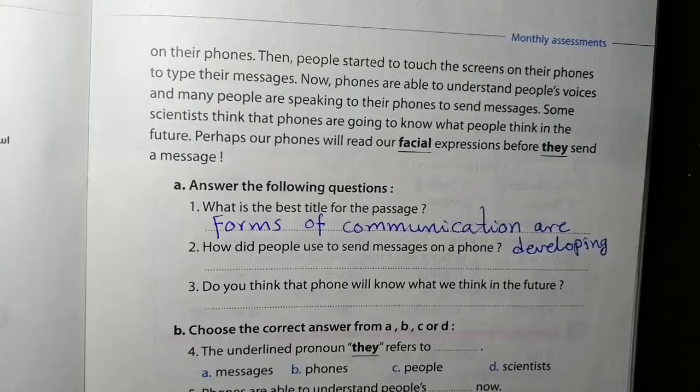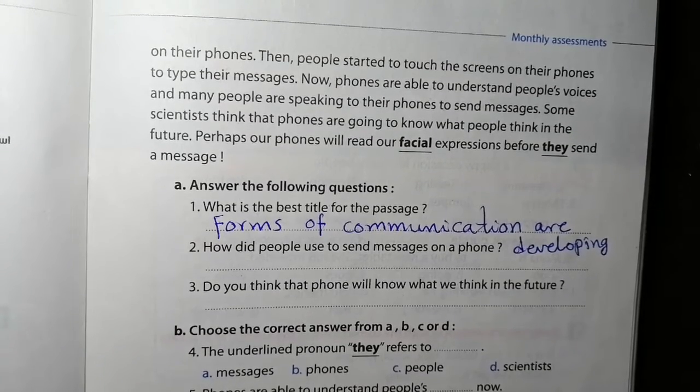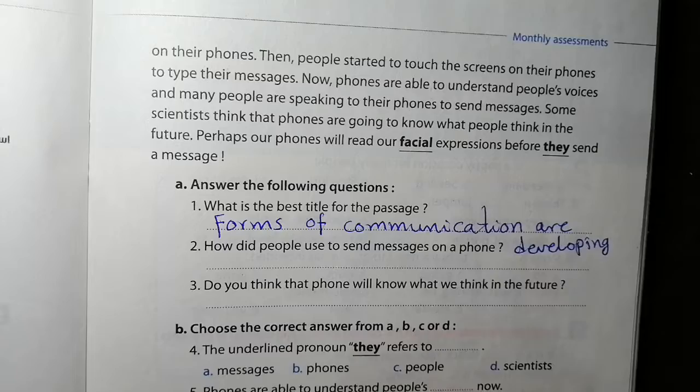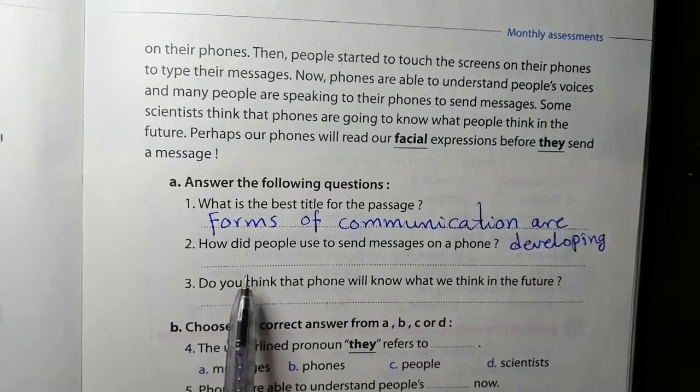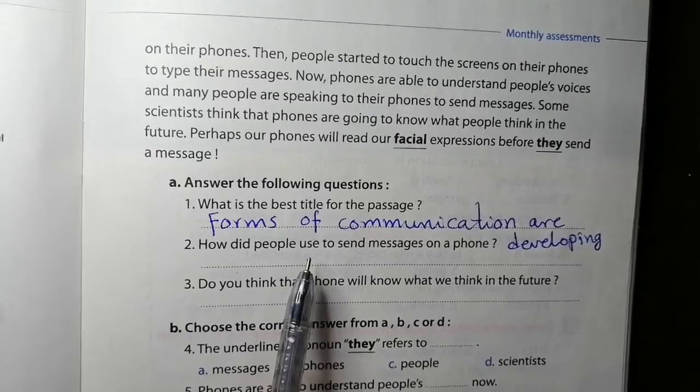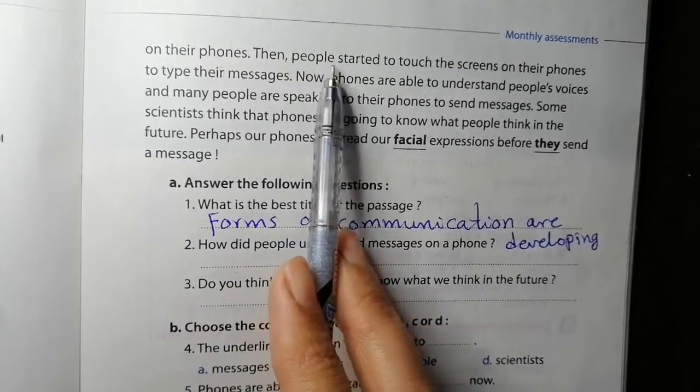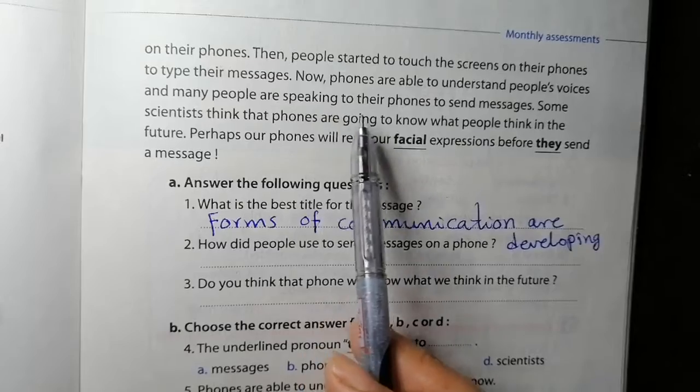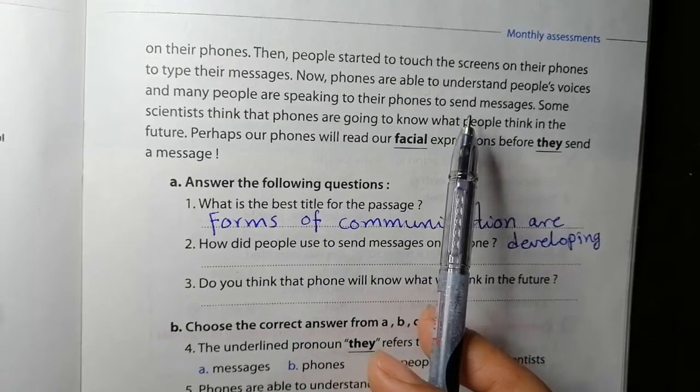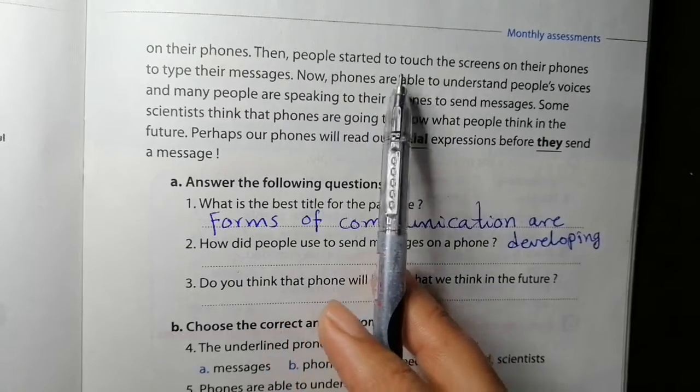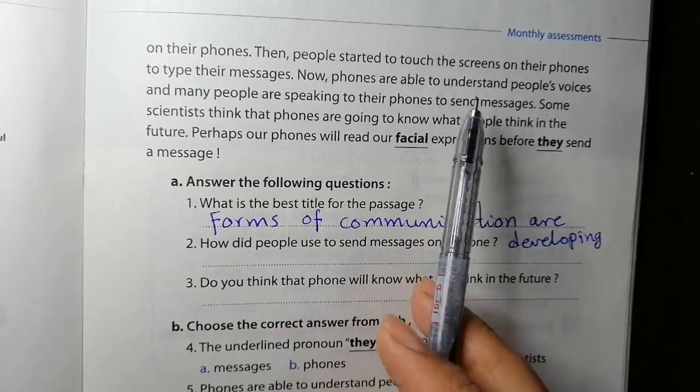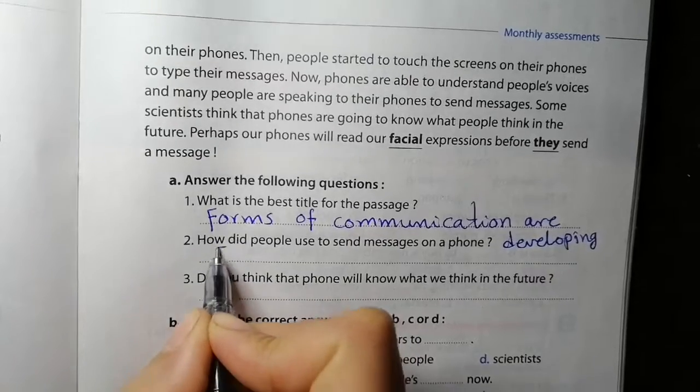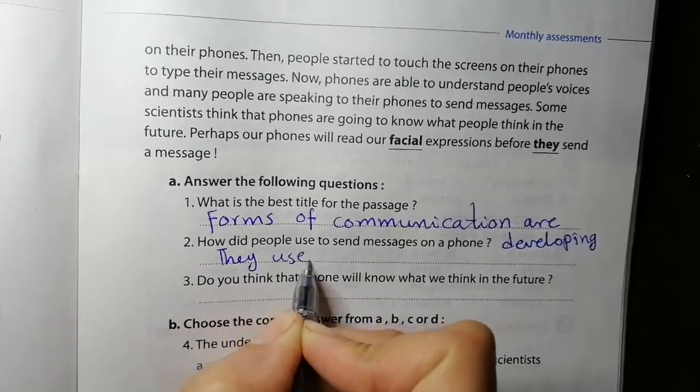How mobile phones have developed over the years. How did people used to send messages on a phone? Actually, in the past people used to type. People started touching the screens on their phones to type their messages, and then it developed to speaking to their phones to send messages. So we have two answers: by touching the screens to type a message, or by speaking to their phones. So they used to type their messages.